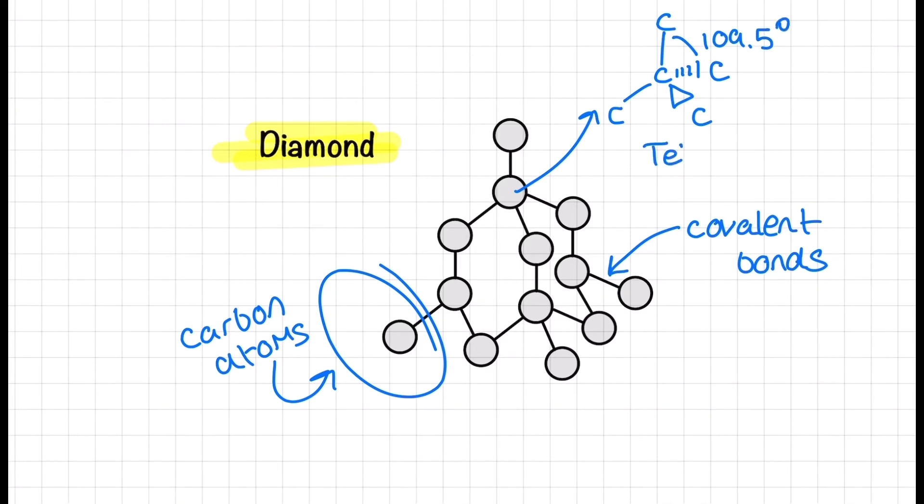Each carbon atom is tetrahedral in shape since it's surrounded by four bond pairs of electrons and this creates a bond angle of 109.5 degrees.